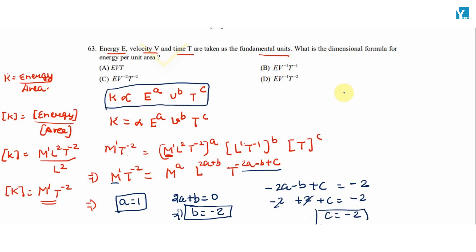On putting the values of a, b, and c here, we will get k is equal to some alpha times E raised to power 1 and V raised to power minus 2 and T raised to power minus 2. Looking at options, option C is the right answer.